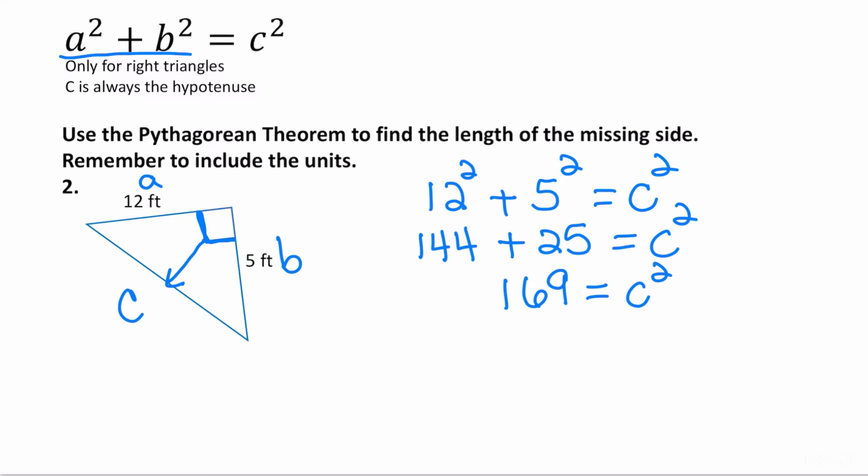144 plus 25 is 169. It's equal to C squared, but be careful, you're not done yet. You need to take the square root of both sides. That cancels out the square. The square root of 169 is 13. That means the hypotenuse is 13. So here the missing side measures 13 feet.